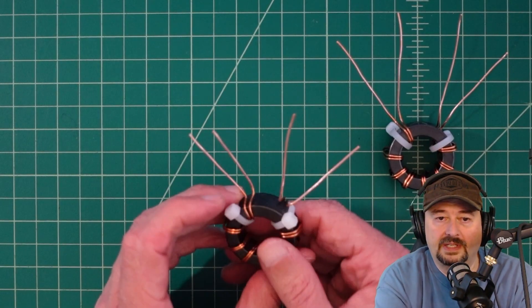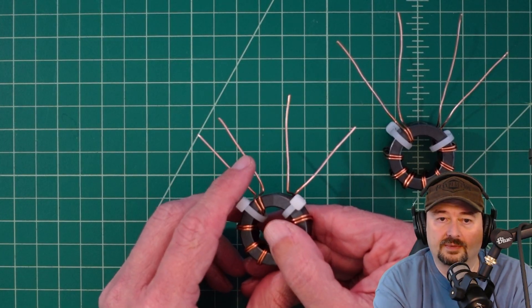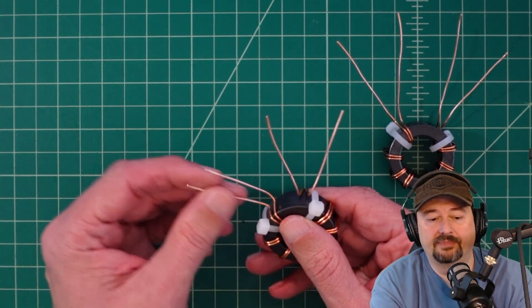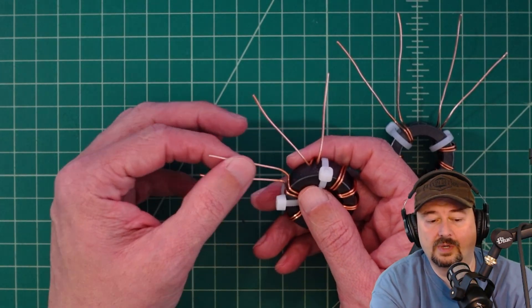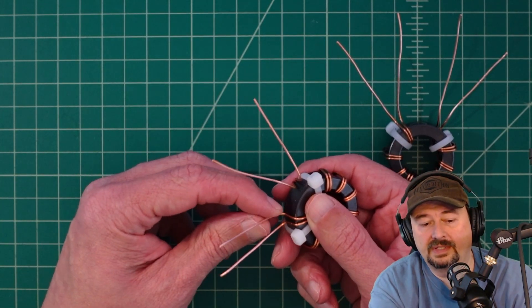Now for both of those windings what we need to do is take our center conductors, which are here and here. I shouldn't call them center conductors, they're really the center wires.